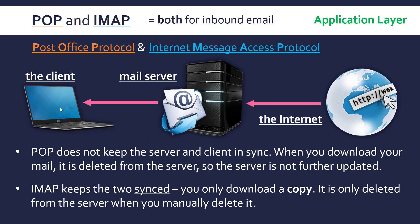IMAP will keep track of any changes you make in your inbox — so for example, if you move your email to another folder, the mail server will keep track of it. This is why you can access IMAP from lots of different accounts. Whereas if you try to do it with the Post Office Protocol, you'd only ever really work on one account because you can only download it once.